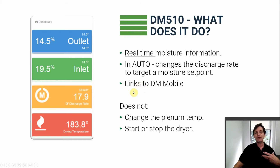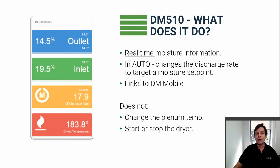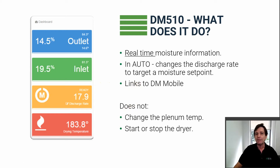A couple of things Dryer Master does not do: it does not change the plenum temperature. If you want to change the plenum temperature, you have to do that from your dryer panel. Dryer Master does monitor the plenum temperature, but we don't change it. Also, if you want to start or stop your dryer, that also has to be done from your dryer panel.